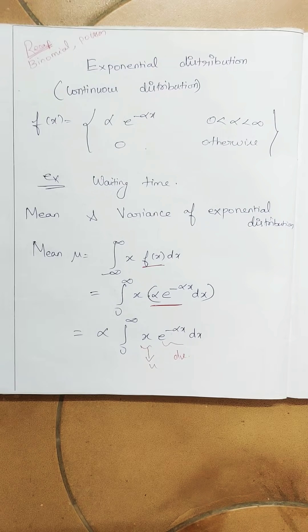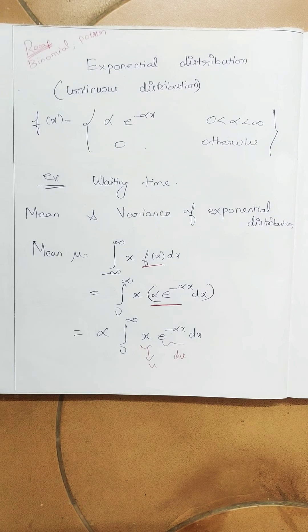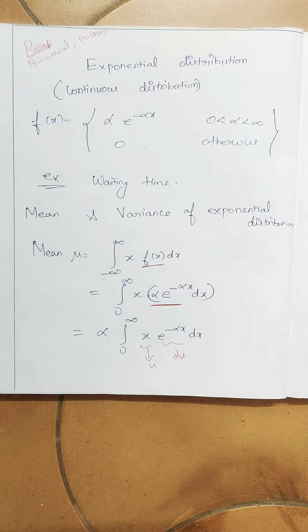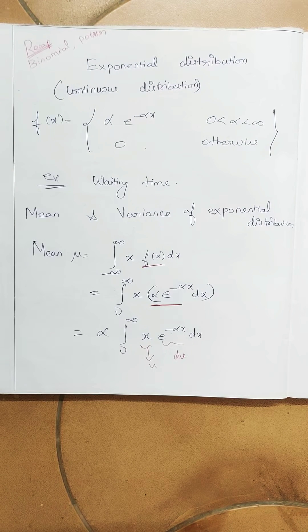We are now in exponential distribution. If you see, it is a continuous version — in binomial and Poisson it's a discrete version. When you are entering a continuous version, for example, it's like waiting time at a bus stand. The bus may arrive at any time within a window — you cannot say exactly if it will come in three minutes or four minutes. So we call such a distribution a continuous distribution, and we are going to learn exponential distribution today.